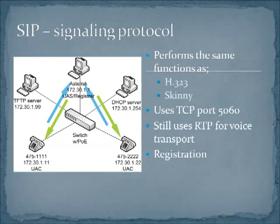After DHCP and TFTP are finished, we now contact the call server. In this case, we are going to use a signaling protocol called SIP. Voice over IP is really broken down into two kinds of protocols: the signaling protocols and the transport protocols. Our three major signaling protocols are H.323, Skinny, and SIP. All of these use RTP as the transport protocol.